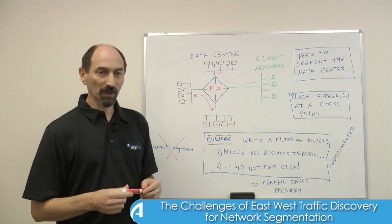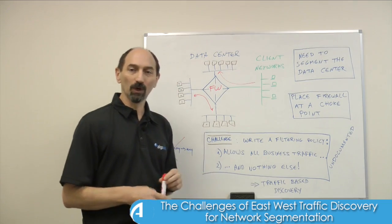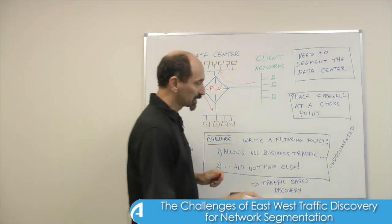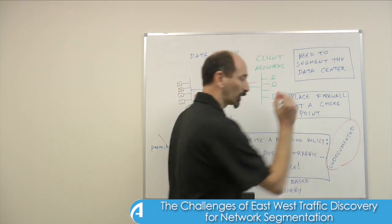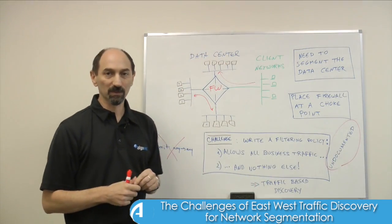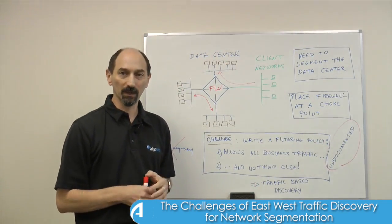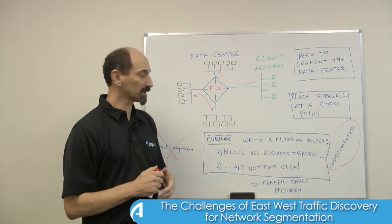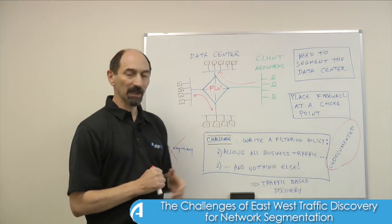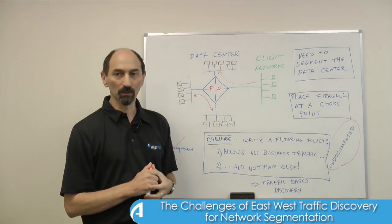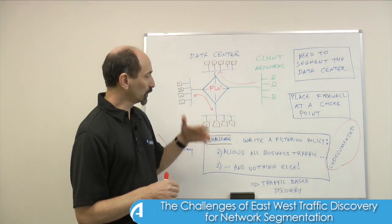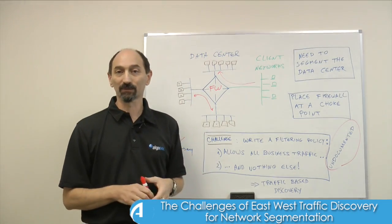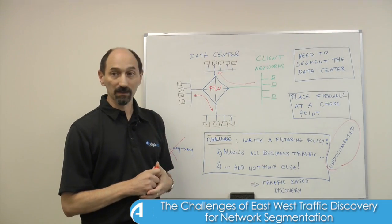The trouble is that you don't really know all these traffic patterns in the data center. This is usually undocumented. Many organizations just don't keep very good records of what each server is doing and what each client requires and what all of these communication patterns are really contributing to. And if you need to write policy to capture that, then you have to find this information out from somewhere. And that's a challenge.